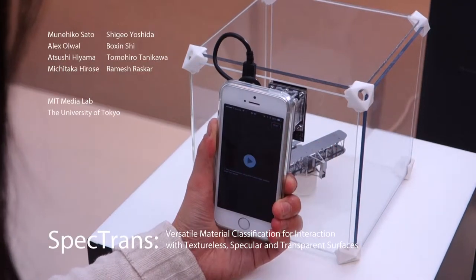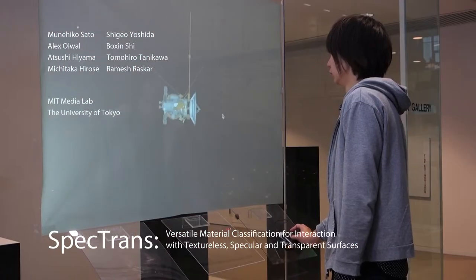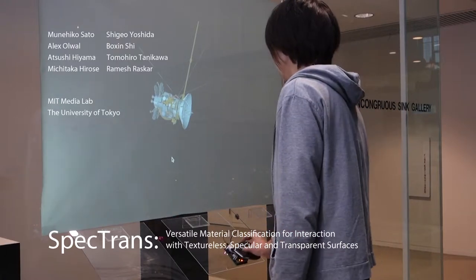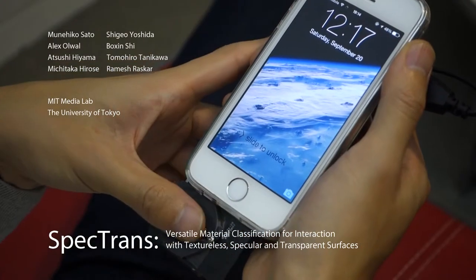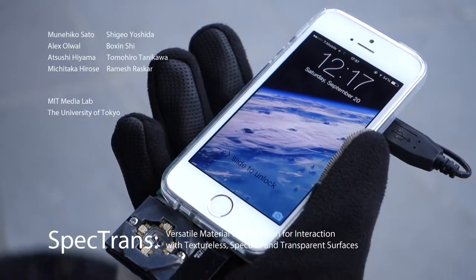We proposed SPECTRANS, a versatile material classification for interaction with a great diversity of materials, from common opaque materials, either diffuse or specular, to challenging textureless and transparent surfaces.